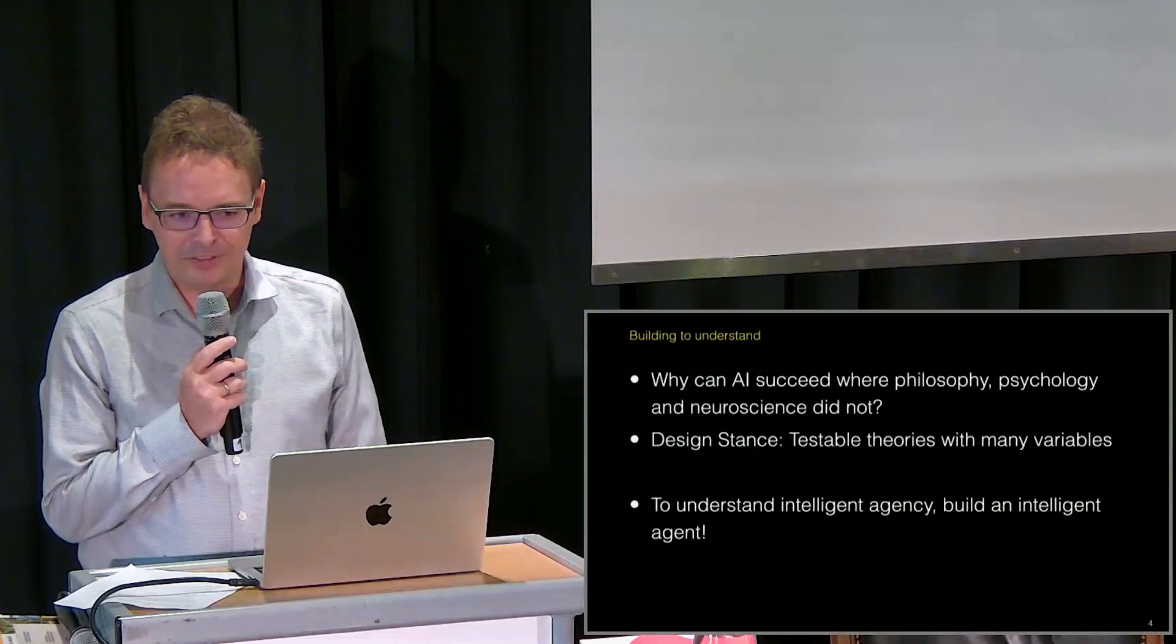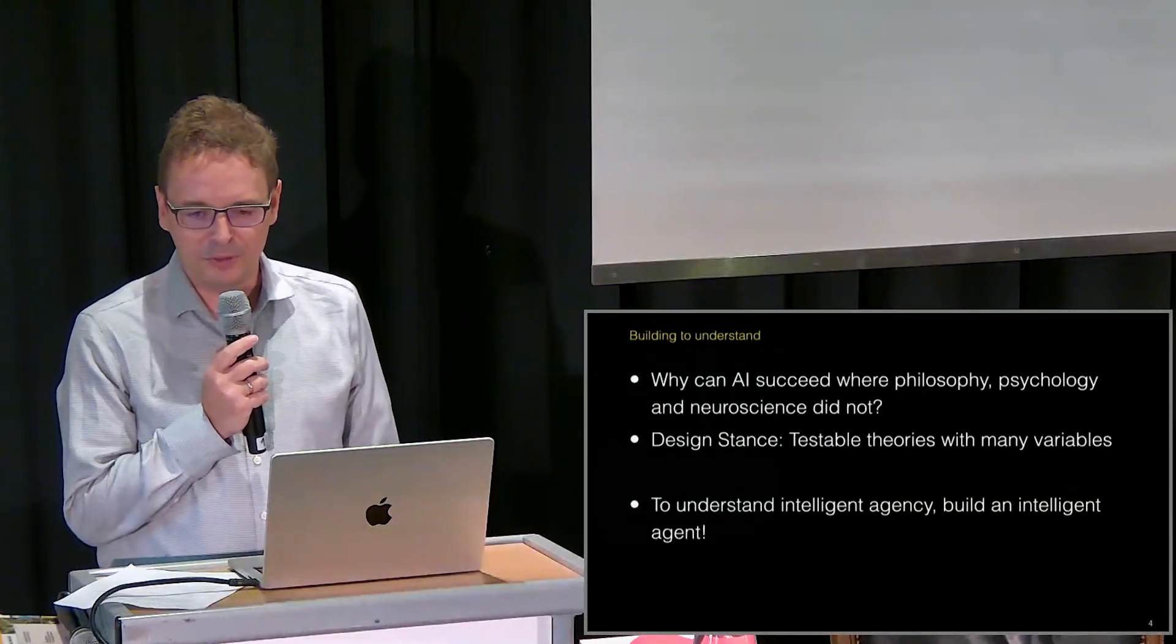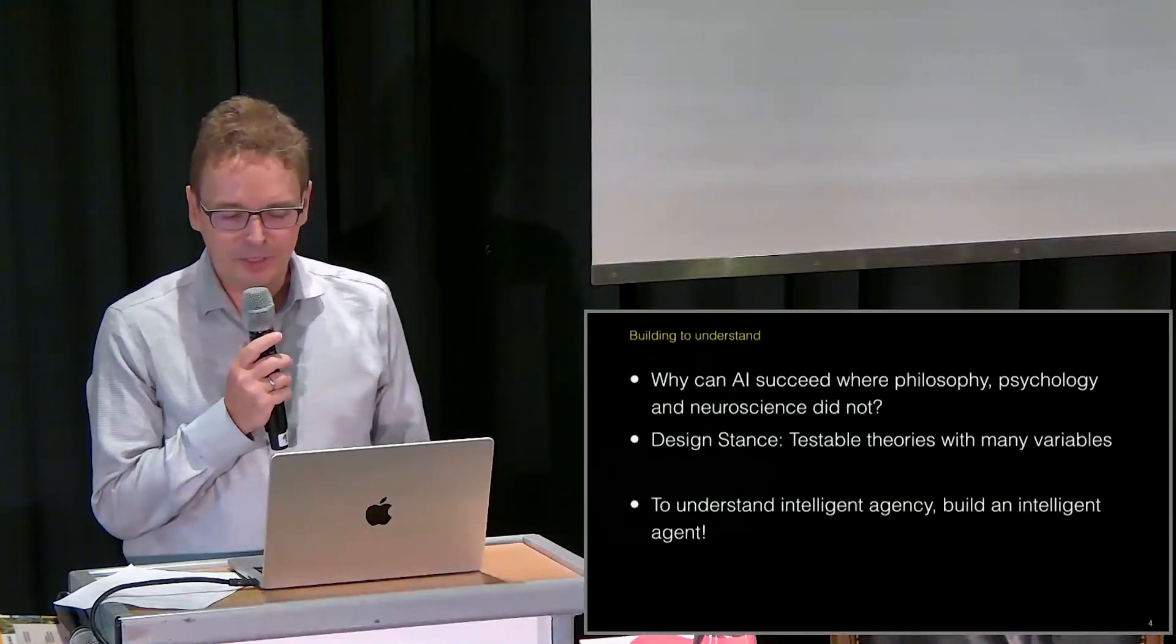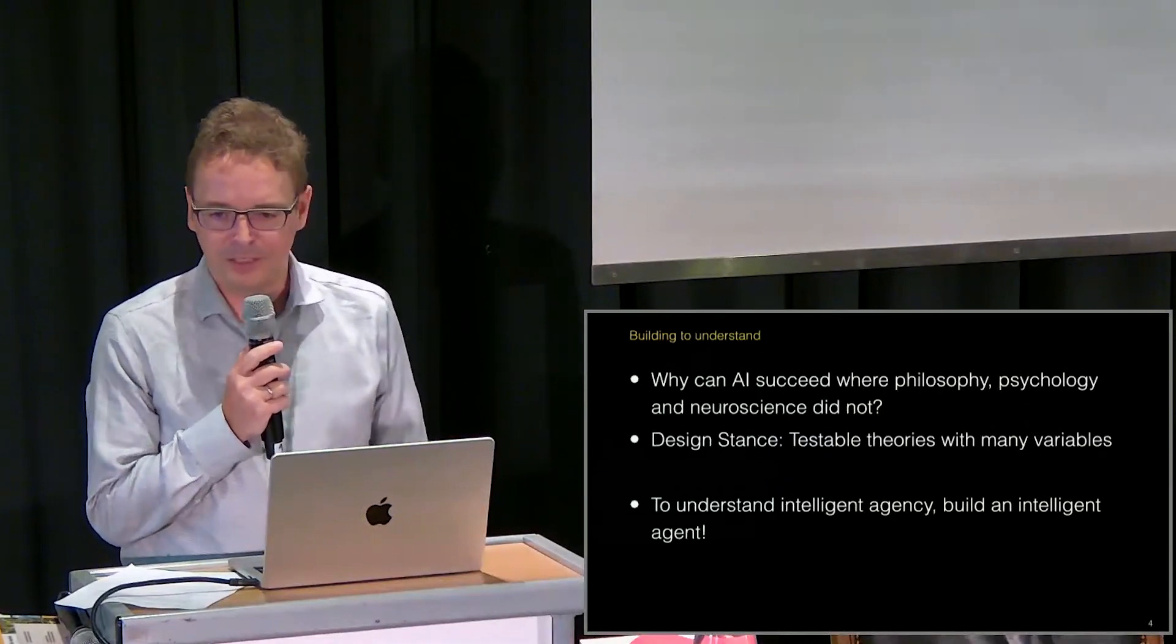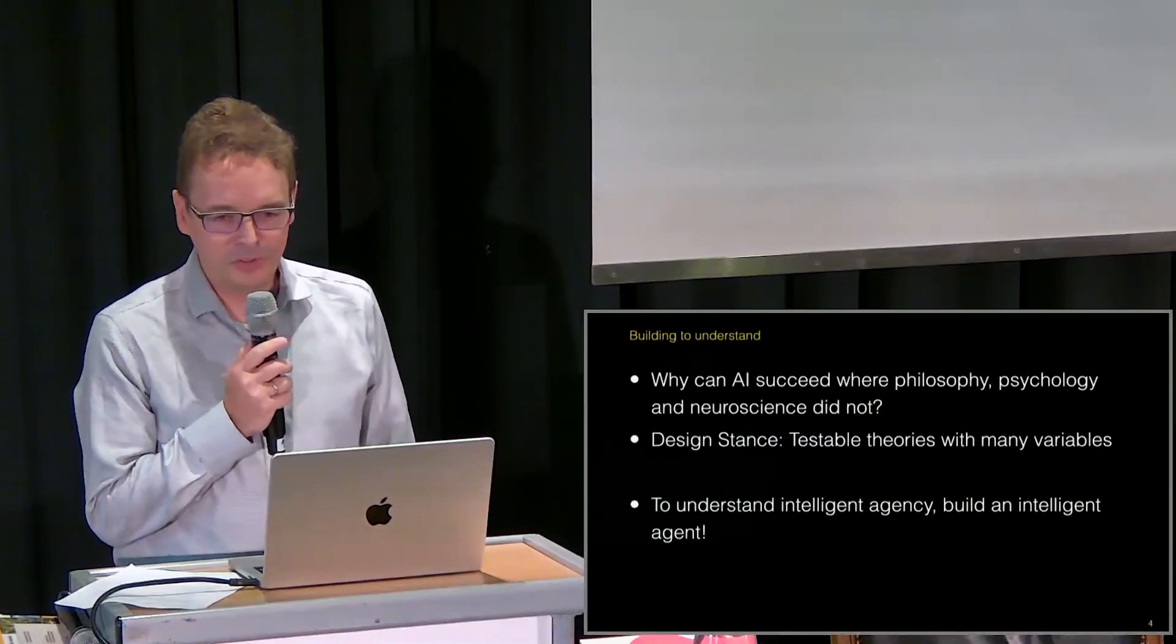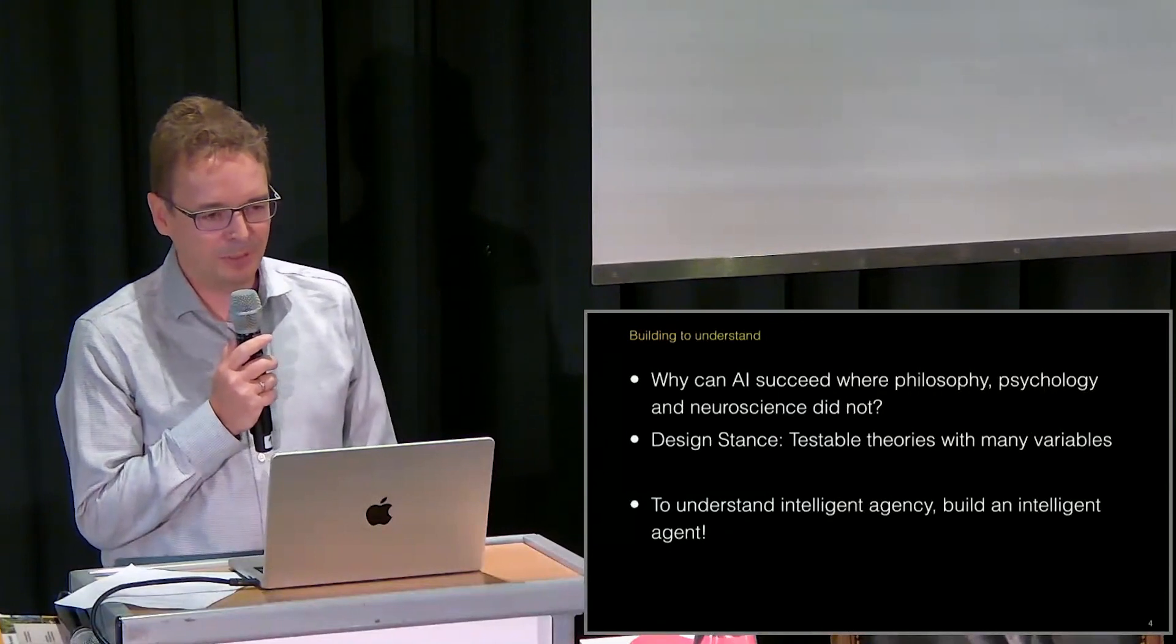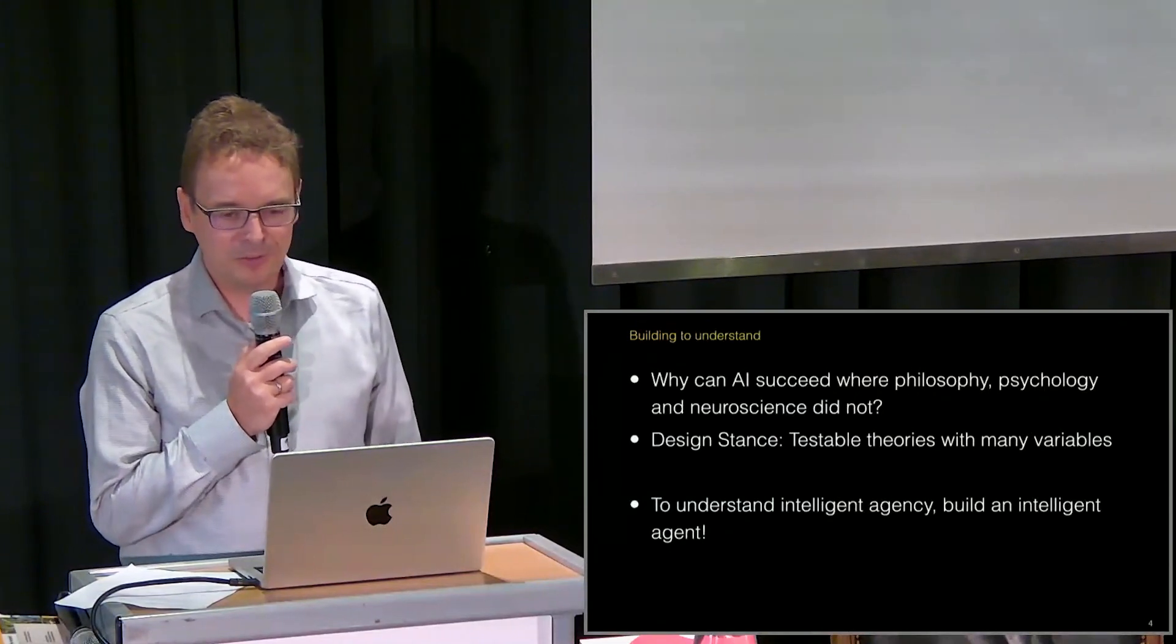And the gaps that exist there are, in large part, also difficult to fill because there is no way to build theories in neuroscience that work in the same way as they do in computer science. The neuroscientist Conrad Cording has written a paper about whether neuroscientists could understand the microprocessor.